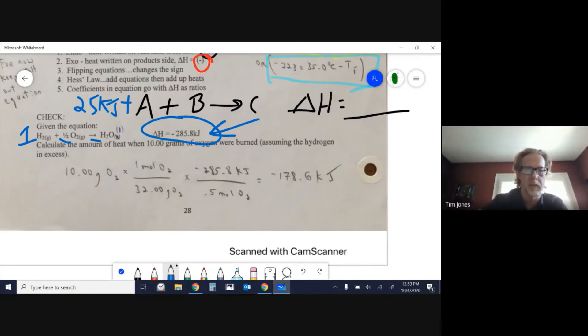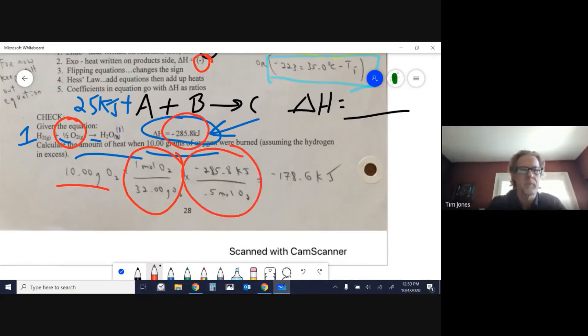In this problem, I set it up like a typical mole problem using fractions. Calculate the amount of heat when 10 grams of oxygen were burned - they say to ignore the hydrogen, it's in excess. I take my 10 grams of oxygen, convert to moles, and then use the balanced reaction with the heat to do stoichiometry. For every half O2, I get that much heat produced.